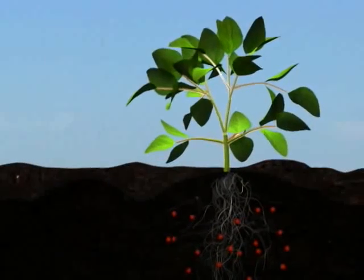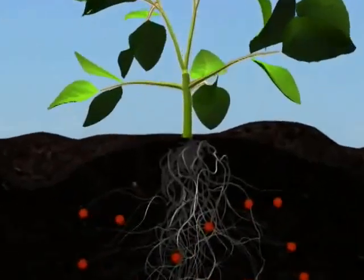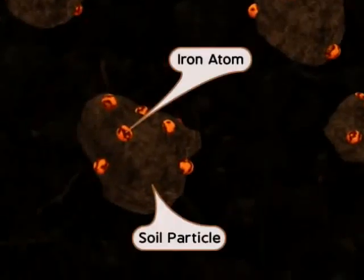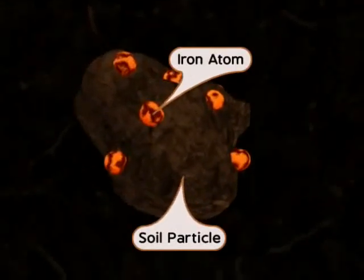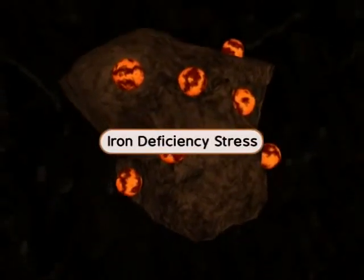To make more iron available, the soil conditions must change, especially near the root surface. Here we see iron bound to soil particles. Unless this iron is released from the particles, the plant will exhibit iron deficiency stress.